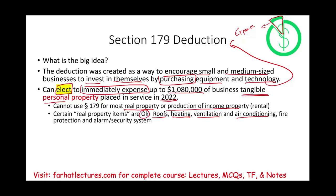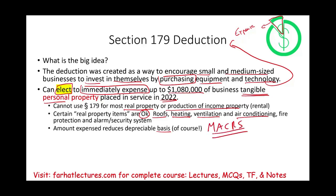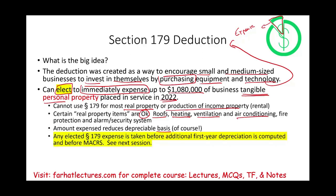Any amount you expense under Section 179 will reduce your basis — just like what we learned in MACRS. If you don't know what MACRS is — the Modified Accelerated Cost Recovery System — please go back to the prior session, because this session implies you understand MACRS. Once you expense an asset, you have to reduce your basis. Any elected Section 179 is taken before additional first-year depreciation and before MACRS.